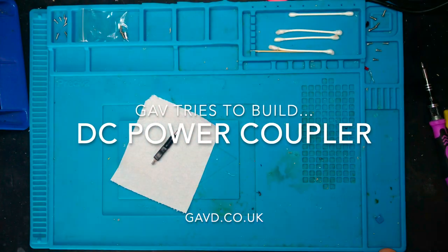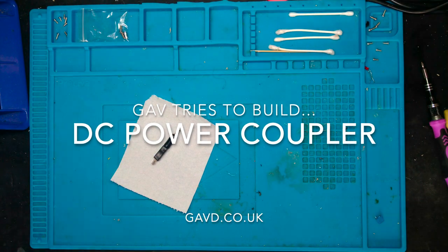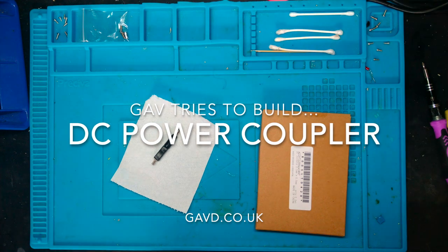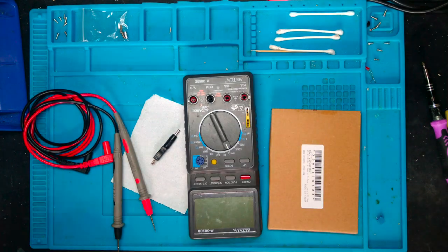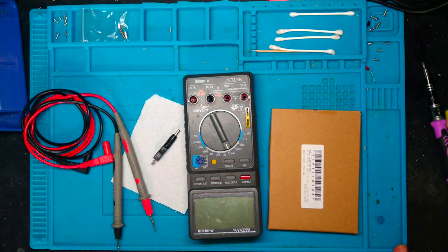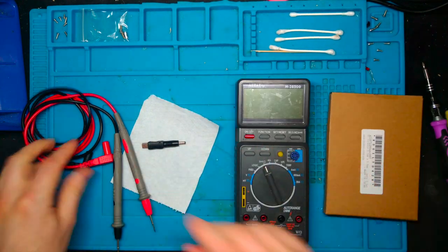Hello and welcome to Gav Tries to Build and today I'm trying to build a DC power coupler. My friend Richard at church approached me and said I've got a project for you, I've got this camera and I can't power it.